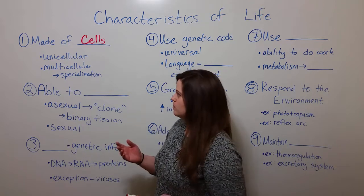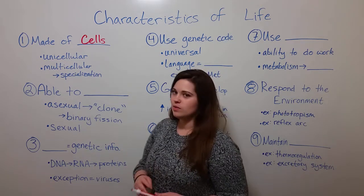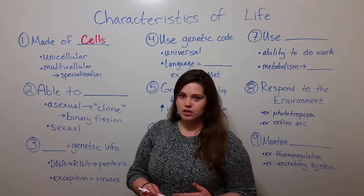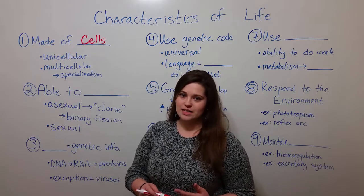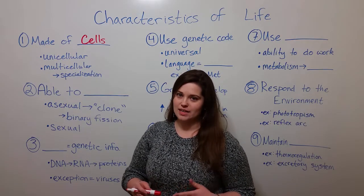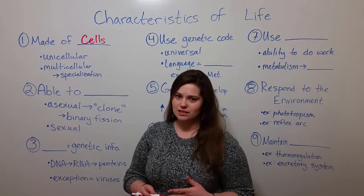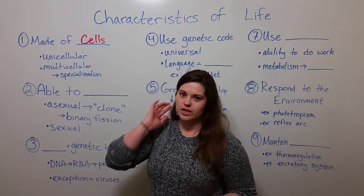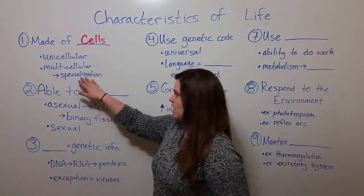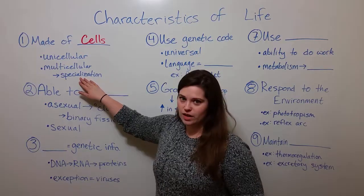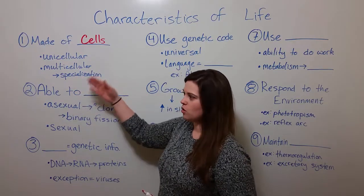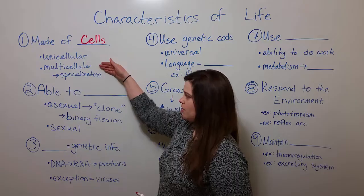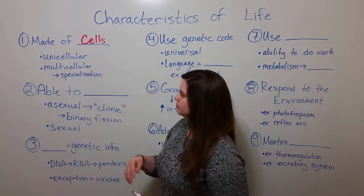If we use human beings as an example, human beings have brain cells, blood cells, heart cells, kidney cells, skin cells, eye cells, lung cells, etc. Many, many different types of cells that all have specialized functions that contribute to the overall health and functioning of the multicellular organism.